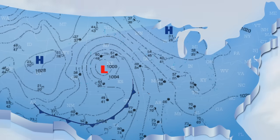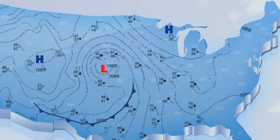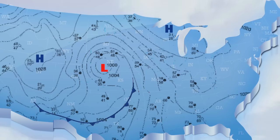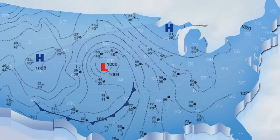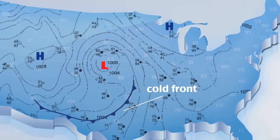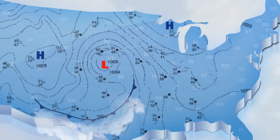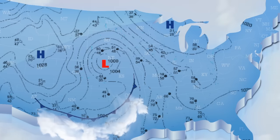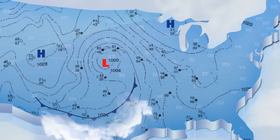The blue lines with the points show the leading edge of colder air, so it is known as a cold front. The points show the direction the cold air is moving.